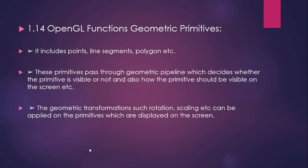Sometimes certain objects may not be visible. For example, if you have placed two cylinders in a row, the front portion of the front cylinder will be visible to the viewer. If the other cylinder is kept behind, it will not be visible. The system should not render all pixels of the object behind the first cylinder — this is decided when the primitive goes through the geometric pipeline. Geometric transformations such as rotation and scaling can also be applied on these primitives.